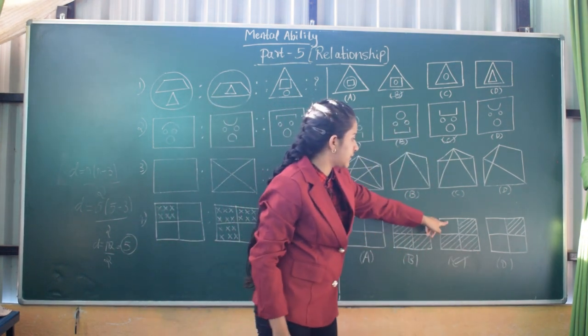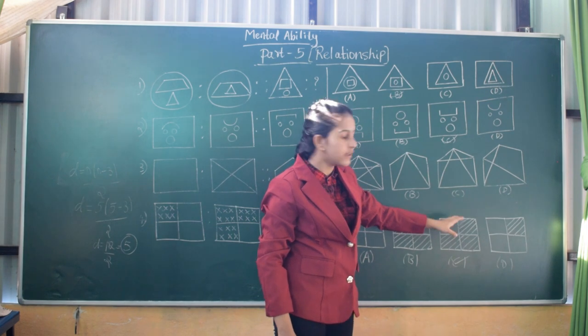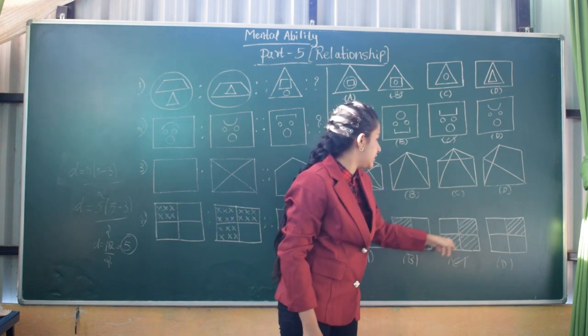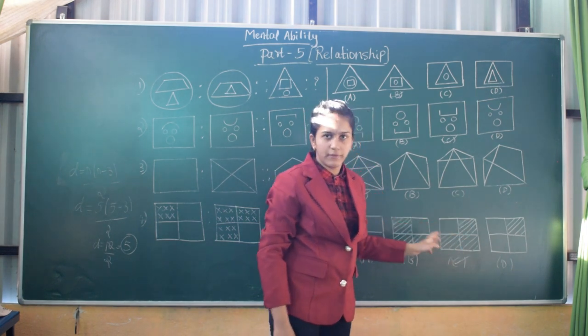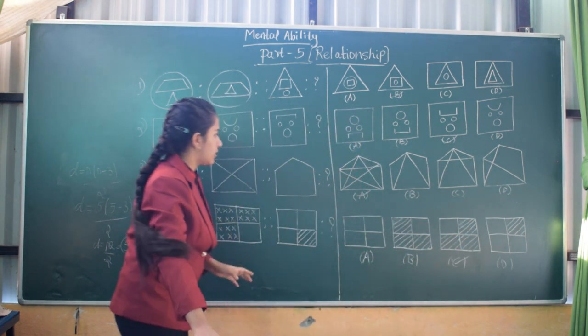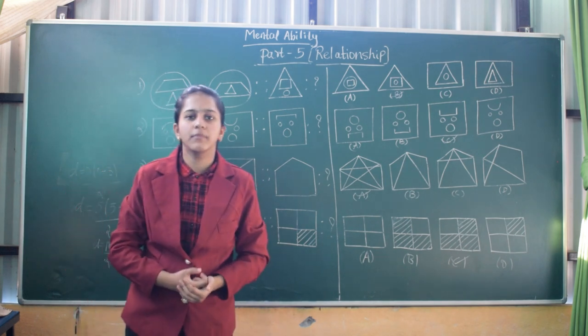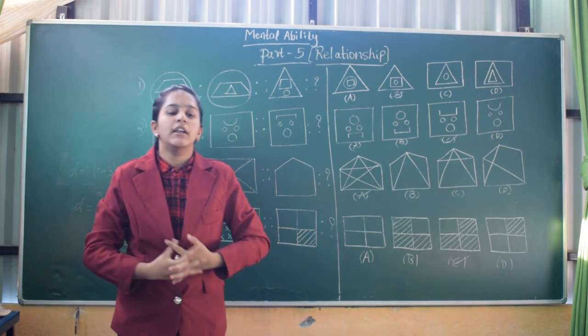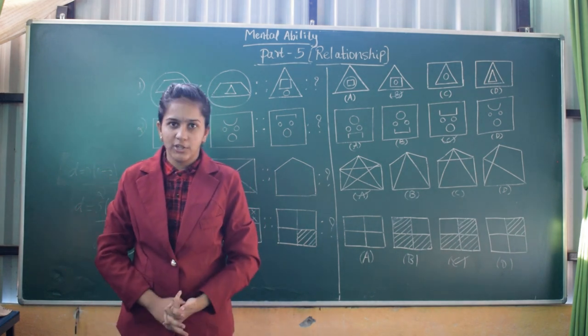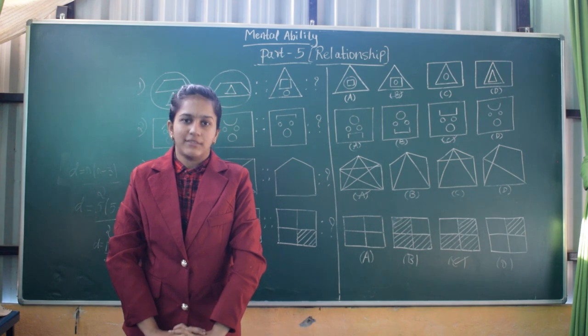In answer C, the first quadrant is left blank and the other adjacent boxes are filled with lines. I hope you understood these relationship figures. If you liked our video, please subscribe to the channel — thank you.